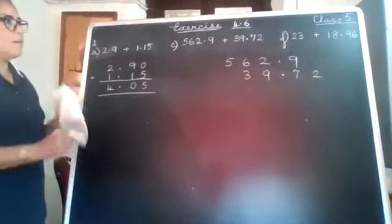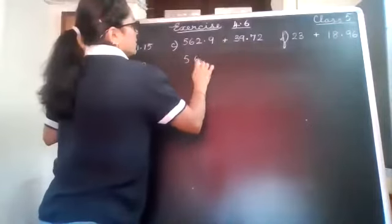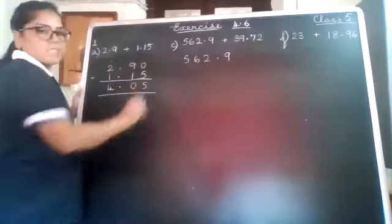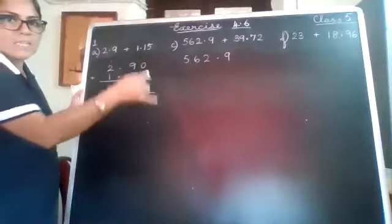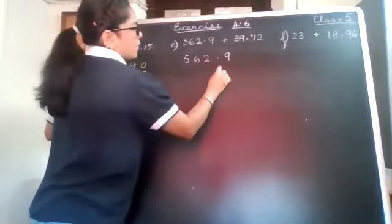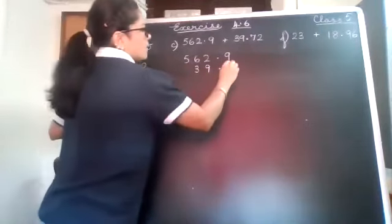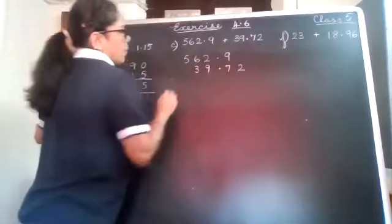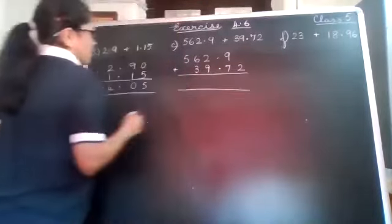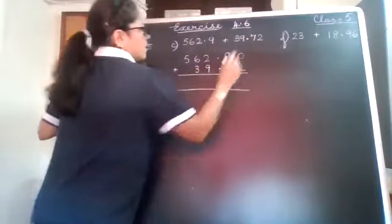Okay, now if I am to do the second one, then how will it be done? First you write 562.9. Now remember that you space your digits so that they can fall nicely one below the other. Next I have to write 39.72. So I write point here, 9 here, 3 before that, 7 after the point and 2 after that. I will put the plus sign. Okay, now that is a blank space over here. I need to fill it with a 0.